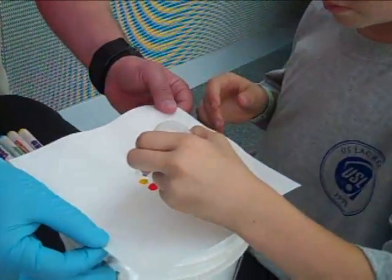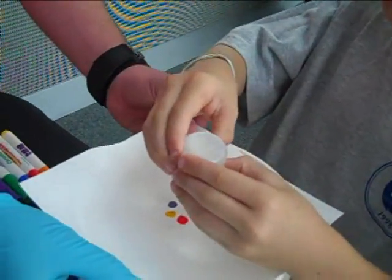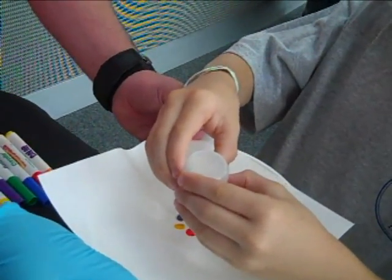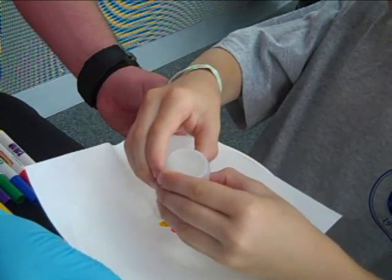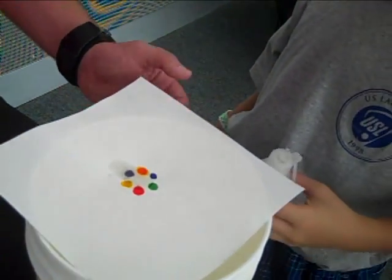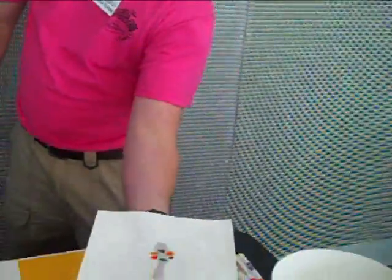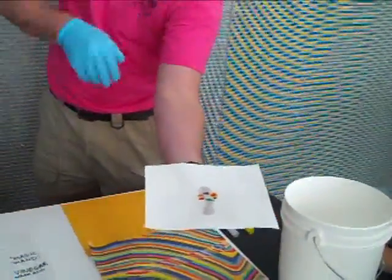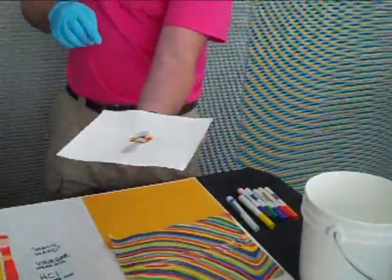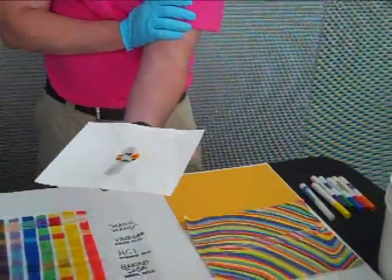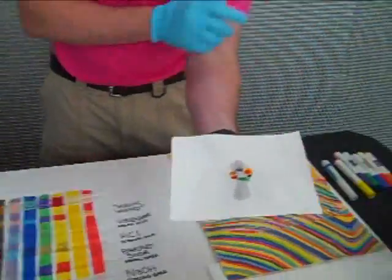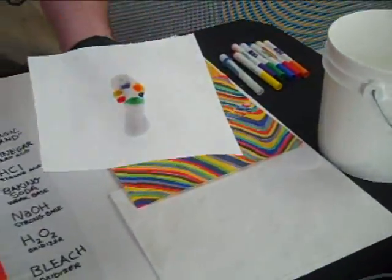Right in the middle. Perfect, thank you. Now if you can see, what's happening is the water is spreading out. And as that happens, the different colors in each of these colors are coming out. So you can see what they're made of. We have the yellow coming out of the orange here, you can see that pretty good.